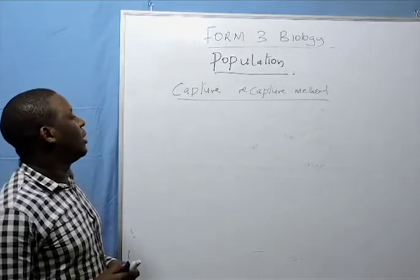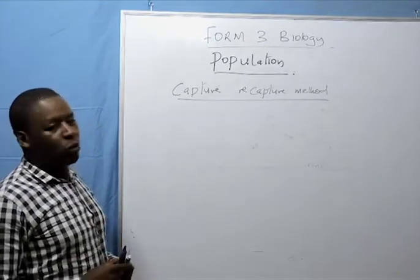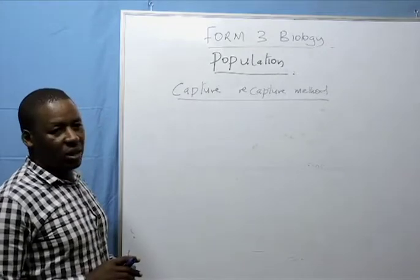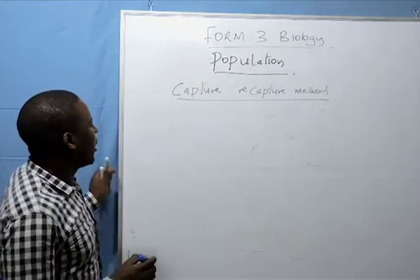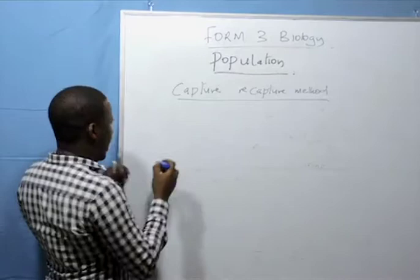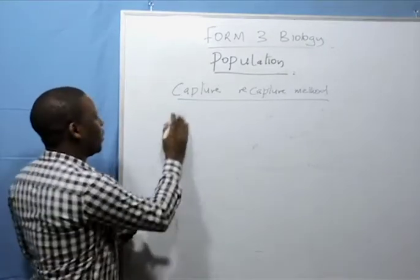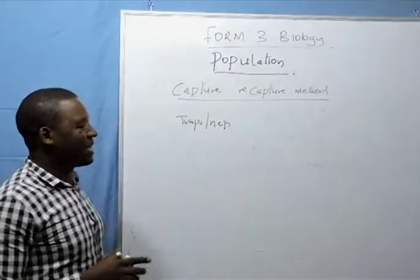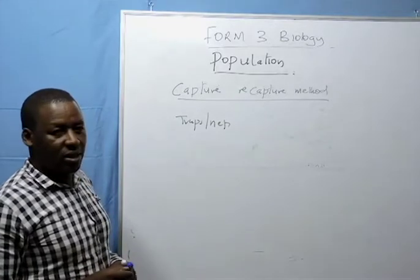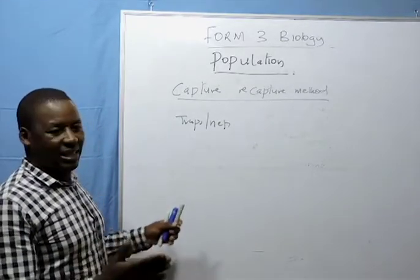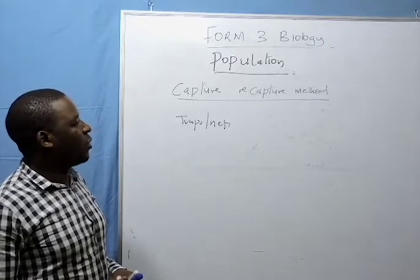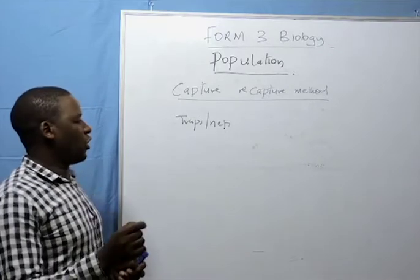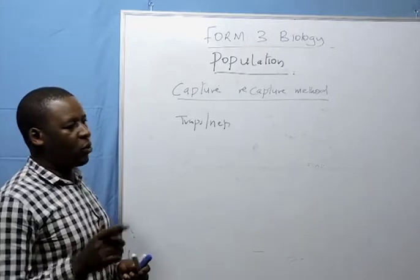In this method, I will take an example. You want to estimate the number of fish in a fish pond. Traps or nets are set in the target ecosystem or habitat, like a fish pond. You set them overnight. In the morning, you count the number of fish that have been trapped or captured.